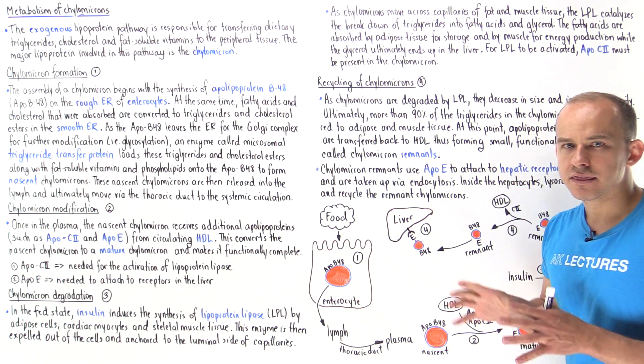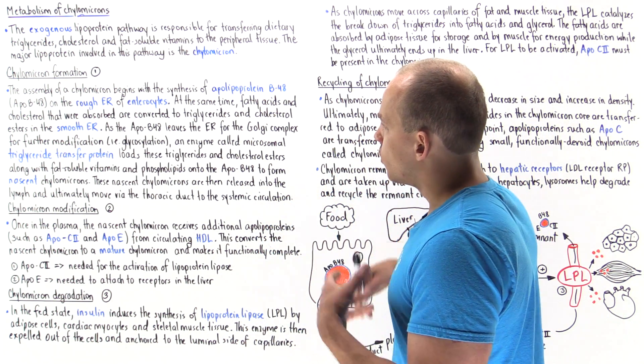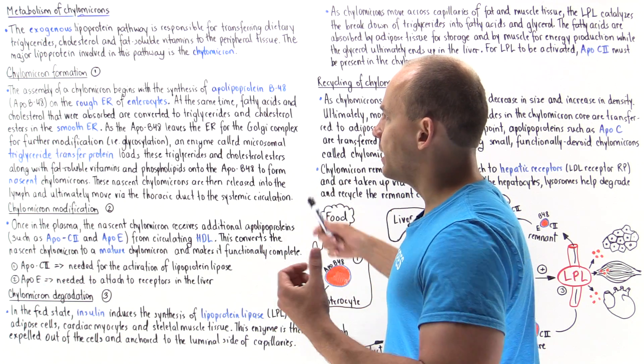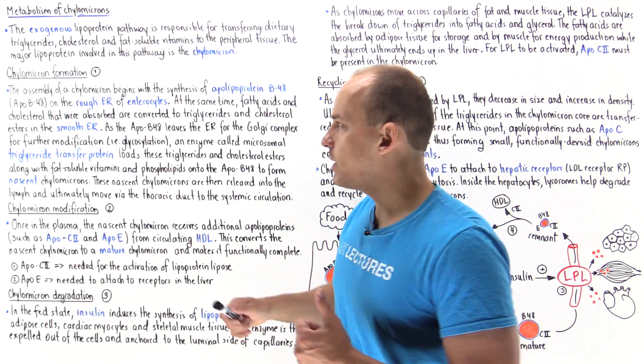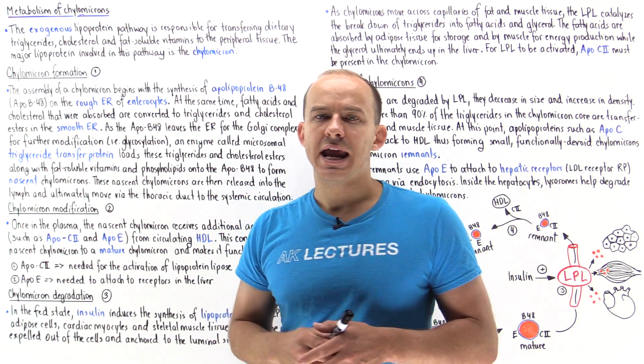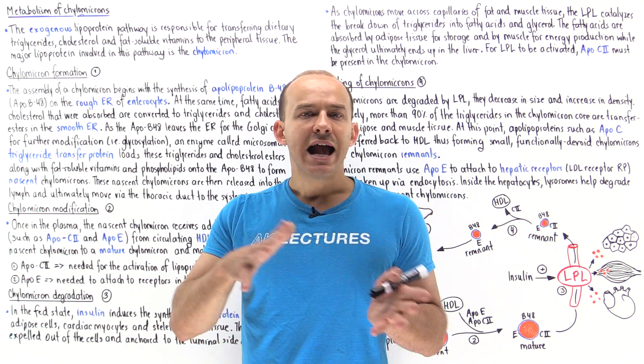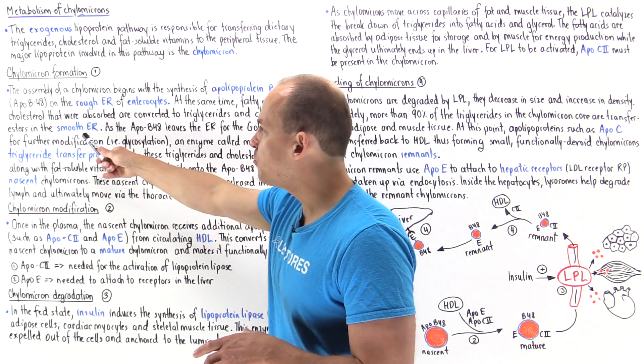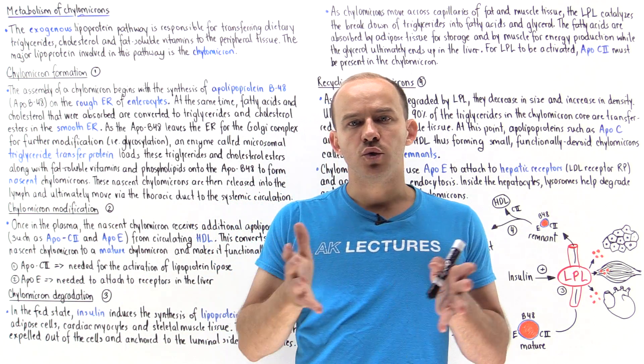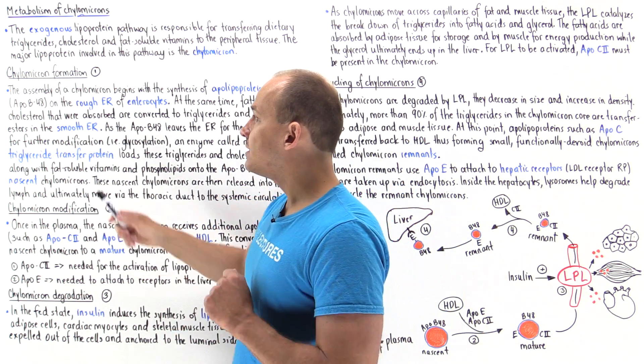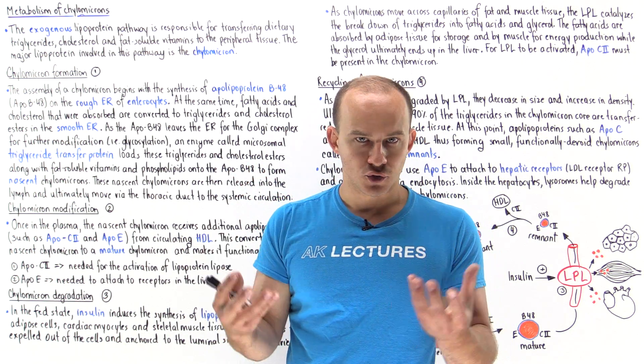Inside the enterocyte, this is where we begin the formation of chylomicrons. We begin forming an important structural protein known as apolipoprotein B48 or simply ApoB48 in the rough endoplasmic reticulum of the enterocyte. At the same time, within the smooth endoplasmic reticulum, we convert cholesterol into cholesterol esters and we combine fatty acids with glycerol to form back the triglycerides.